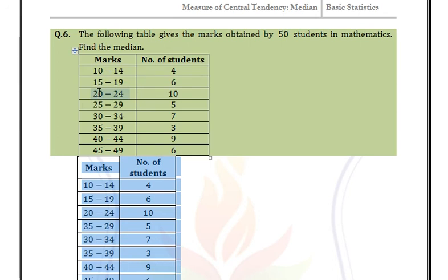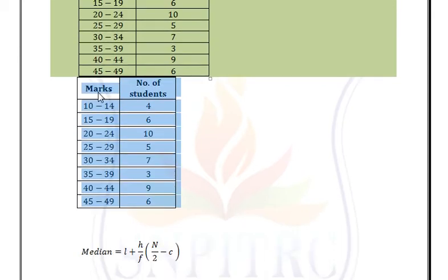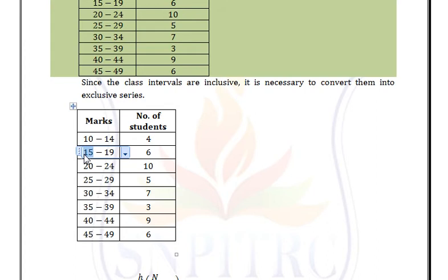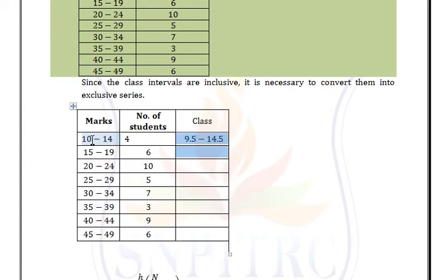The difference between the ending point of one class and the starting point of the next is 1, so subtract 0.5 from the lower limit and add 0.5 to the upper limit. The class 10–14 becomes 9.5–14.5, and the class 15–19 becomes 14.5–19.5.